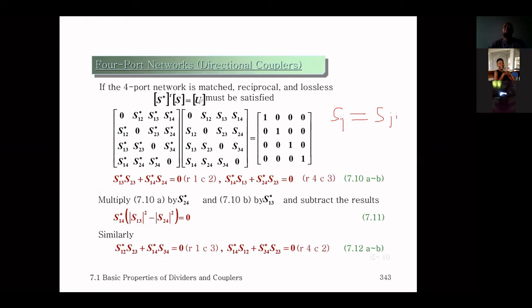Because the network is lossless, the product of the conjugate transpose times the original S-matrix must equal the unitary matrix. The resulting matrix has elements S12, S13, S14, S23, S24, and S34 appearing symmetrically, and when we perform this multiplication we get the identity matrix.